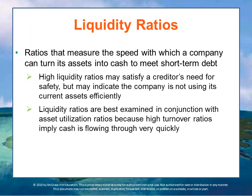Let's turn to cash management or asset management measures related to liquidity. Liquidity ratios compare current short-term assets to current short-term liabilities, indicating the speed with which a company can turn its assets into cash to meet debt obligations. High liquidity ratios may satisfy a creditor's need for safety, but ratios that are too high may indicate the organization is not using current assets efficiently. Liquidity ratios are best examined alongside asset utilization ratios, because high turnover ratios imply cash is flowing through quickly, reducing the need for large reserves.